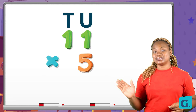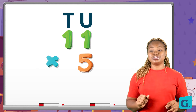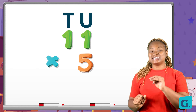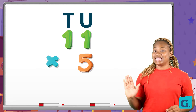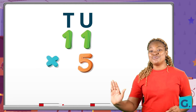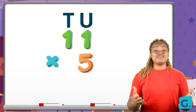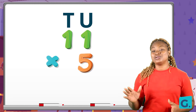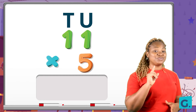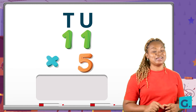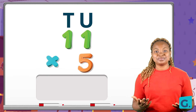Remember, because it's a two-digit number, we need to put our place values. So we have tens and units, and 11 is arranged under that. Now we have 5 — 5 is a units number, so we put it under the ones or units place. Don't forget your times sign — put that there also.